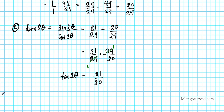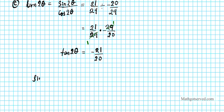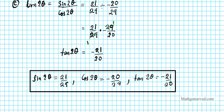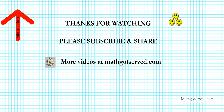Let's write all the answers in an organized fashion: sine 2θ is 21 over 29, cosine 2θ is negative 20 over 29, and tan 2θ is negative 21 over 20. There go all your answers. Thanks so much for watching this presentation. Feel free to subscribe, like the video, and post a comment. More clips can be found on microdeserve.com. Thanks again and have a wonderful day.